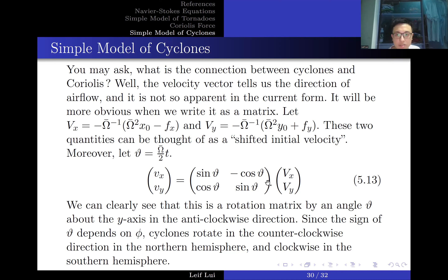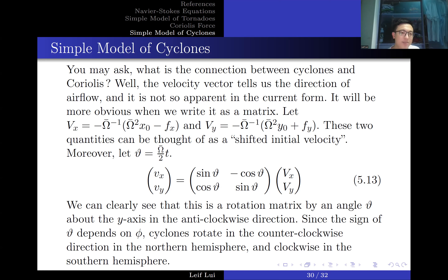Since the sign of var-theta depends on the polar angle phi, cyclones in the northern hemisphere rotate in the counter-clockwise direction, while cyclones in the southern hemisphere rotate in the clockwise direction. This rotation matrix makes the direction of rotation immediately apparent, which is more enlightening than the standard textbook approach of solving a quadratic equation and discarding one solution as non-physical.